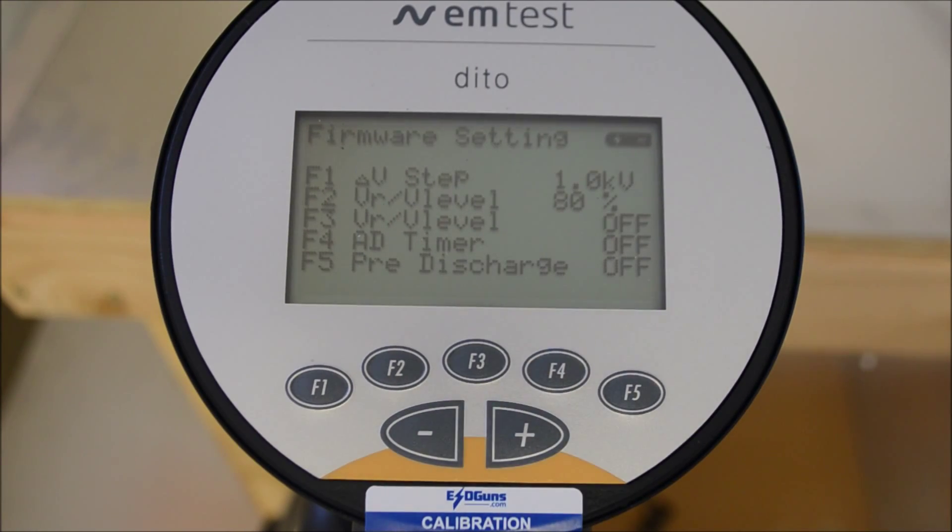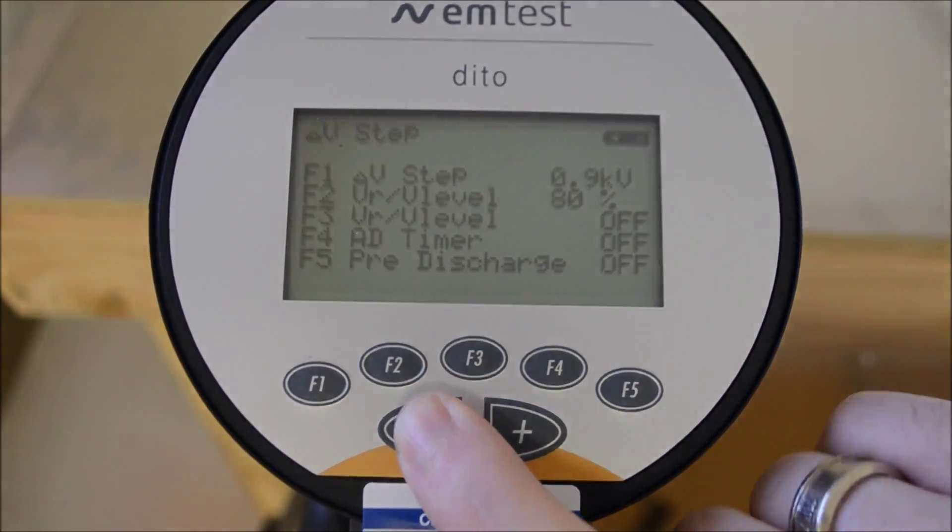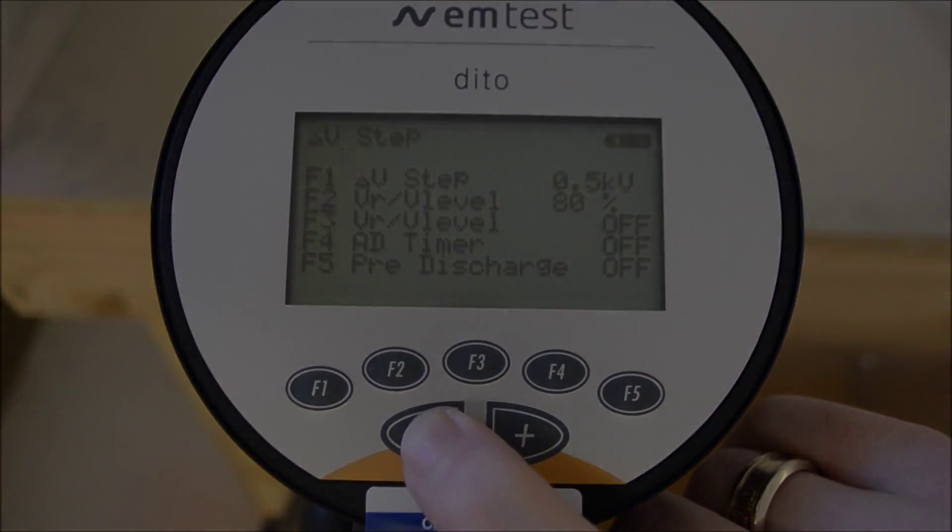Back to the setup submenu several software settings can be adjusted. You may have noticed earlier voltage adjustments in 1000 volt steps. Here we can adjust the voltage step level down to 100 volt steps.